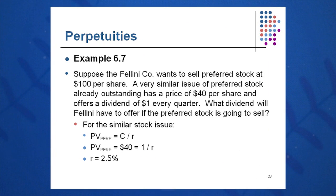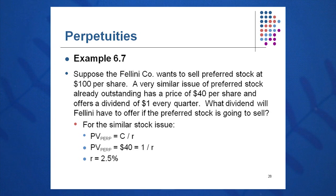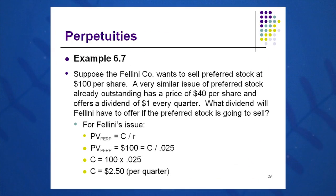Here's a good example. Fellini company wants to sell preferred stock at $100 a share. A similar share issue goes for $40 a share and pays a dividend of $1 every quarter, or $4 a year. What will this preferred stock dividend have to be to be equivalent? The rate is C over R — $40 over R gives a rate of 2.5%. Multiplying that rate times the $100 share issue gives $2.50 per quarter, or $10 per year. A very simple concept: present value of a perpetuity equals C over R.